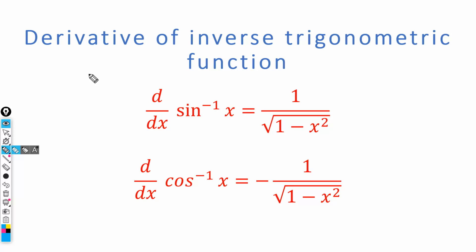Hello, welcome to our channel. Today we are going to take the derivative of inverse trigonometric functions. If we have a function like sine inverse of x, the derivative is equal to 1 over the square root of 1 minus x squared. The derivative of cos inverse of x is equal to minus 1 over the square root of 1 minus x squared. Today we are going to prove these two equations.